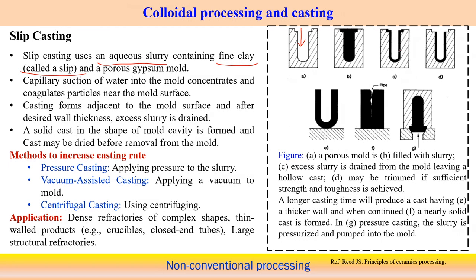Once the mold is filled with slurry, after a certain time the remaining slurry is drained out. A solid layer is deposited over the surface and the remaining water passes through the porous medium. The part is then dried and removed from the mold. If the slurry is left in the mold longer, a thicker wall is produced — as shown in figure E. Continuing further, a nearly solid cast can be formed using this process.